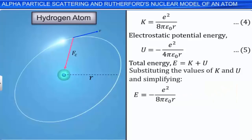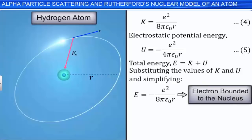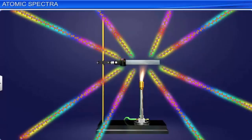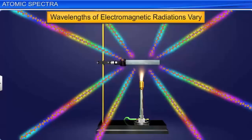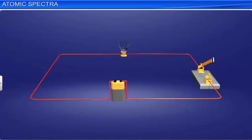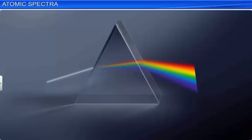When a metallic body is heated, it emits electromagnetic radiation that may consist of different wavelengths. For example, when the filament of an electric bulb is heated, it emits white light consisting of radiations in the visible range. When this white light is passed through a prism, we obtain a continuous spectrum consisting of all wavelengths, where one color gradually merges into the other without a clear demarcation between adjacent colors.